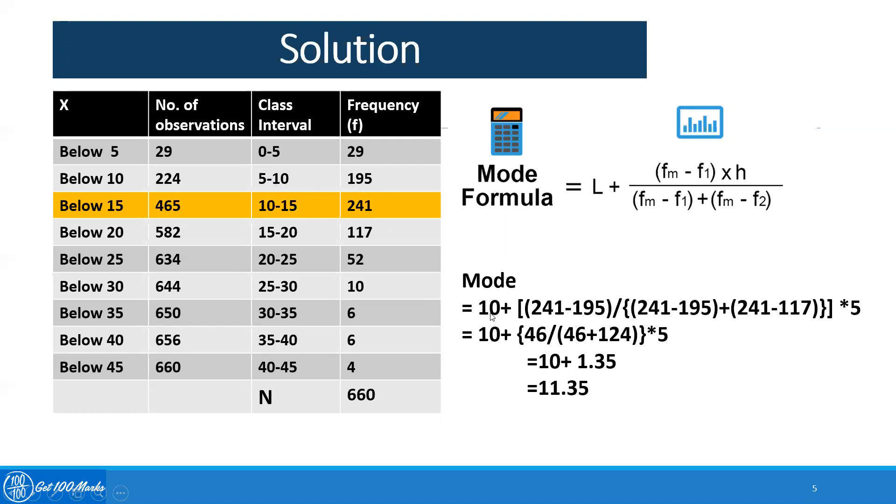Applying the formula, once again, let me explain it. So lower boundary or lower limit of the modal class, which is 10, plus modal class frequency, which is 241, minus previous class frequency, which is 195, divided by (241 minus 195) plus (241 minus 117).